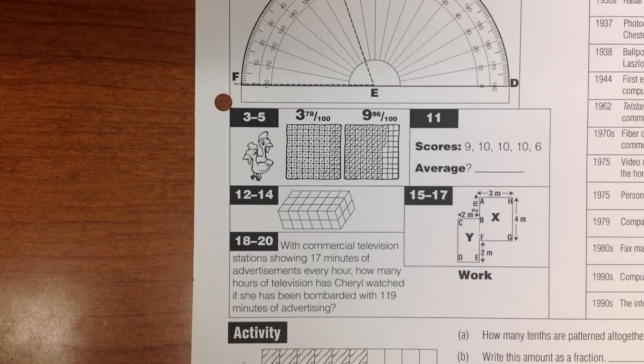Number 5. Write the total amount eaten by both chickens as a mixed number. Write the total amount eaten by both chickens as a mixed number.